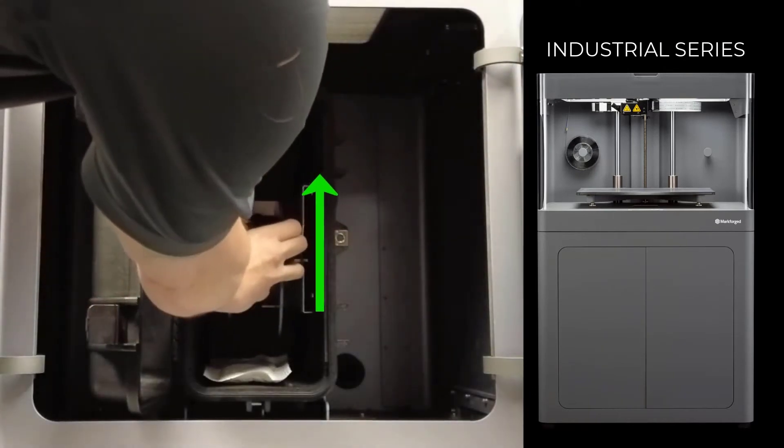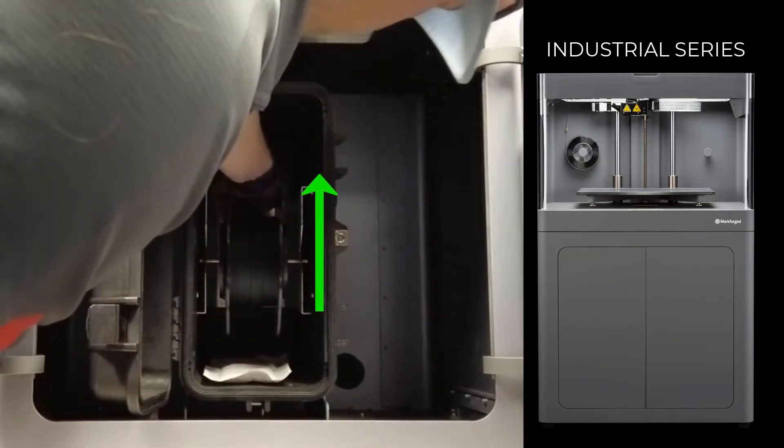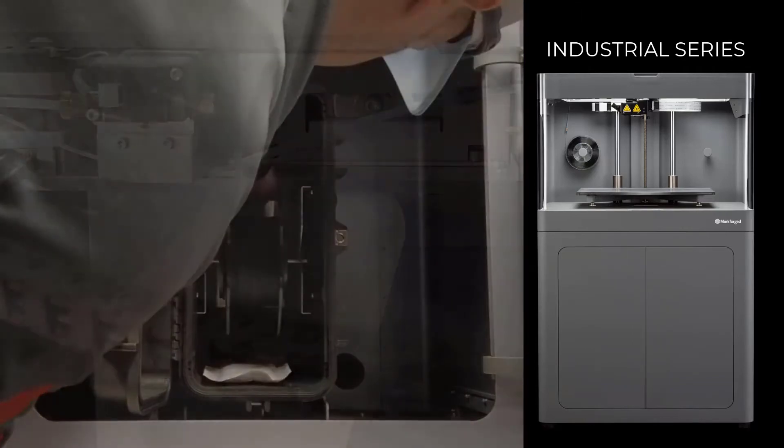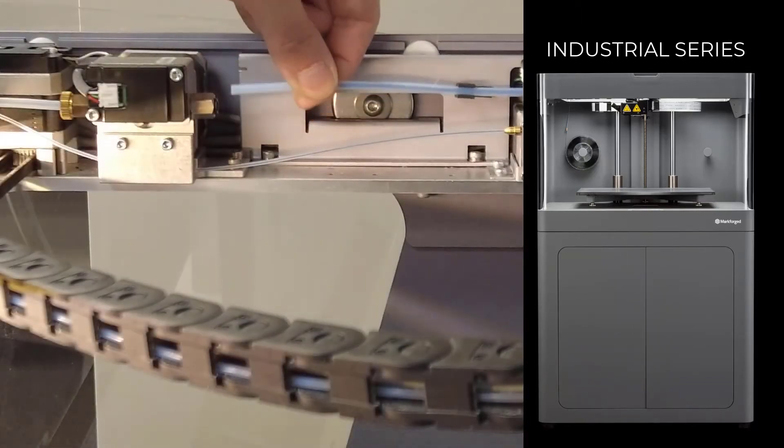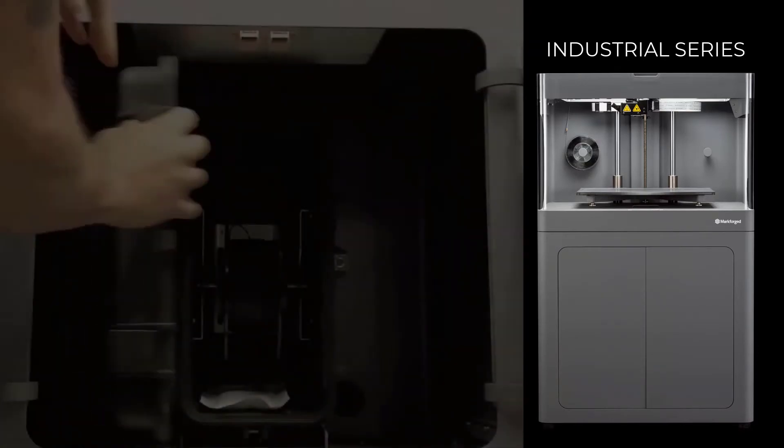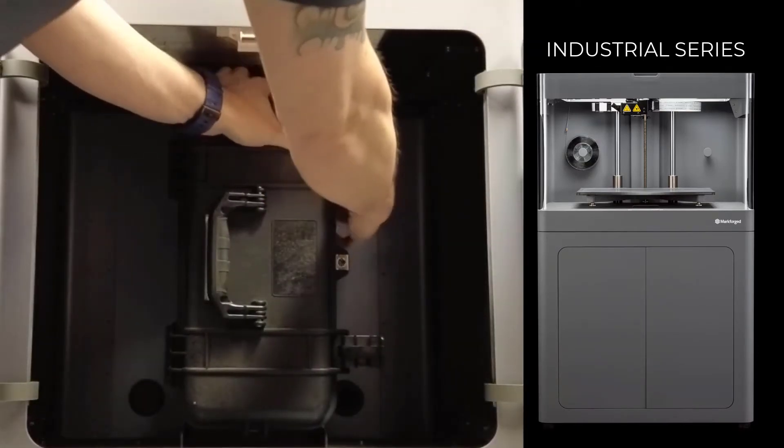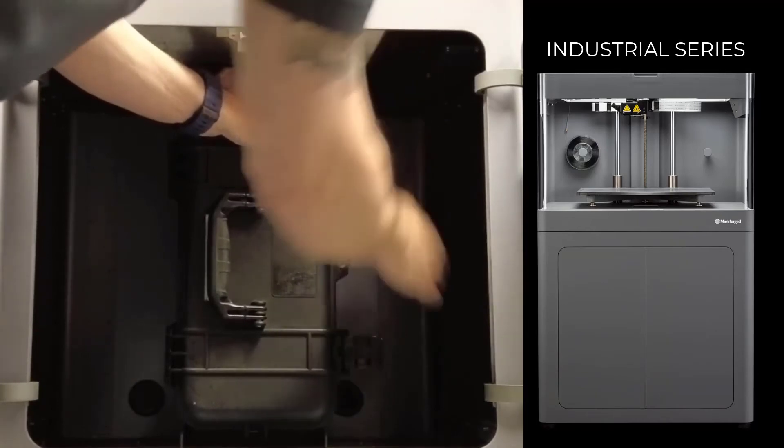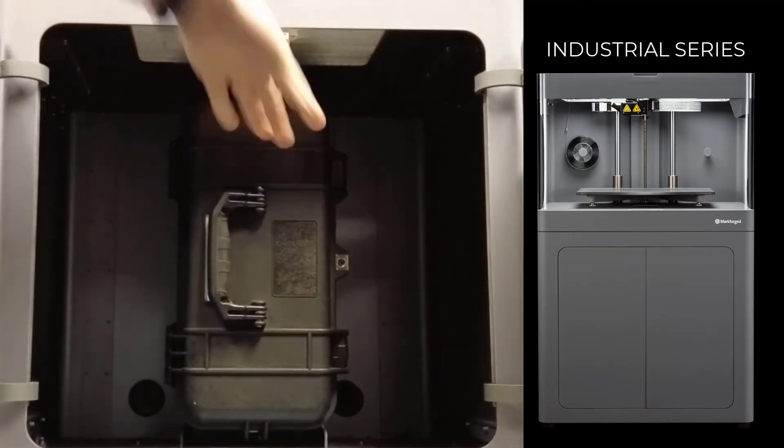Place spool and spindle in the dry box such that the filament exits from the top of the spool. Insert the end of the filament into the dry box adapter and feed it all the way through the plastic feed tube until it extends out the other end. Close the dry box cover and press the latches closed until they click twice each then close the cabinet doors.